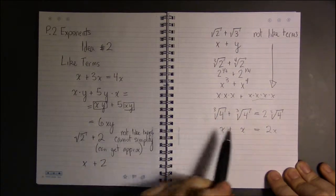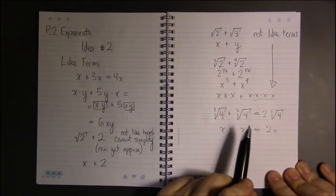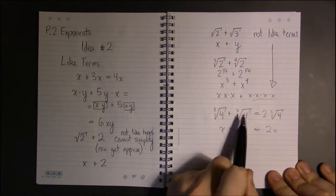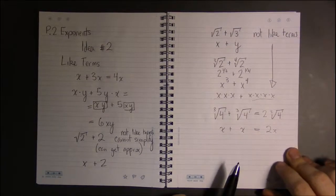So in order for a radical to be a like term, they have to have the same number inside as they do outside.